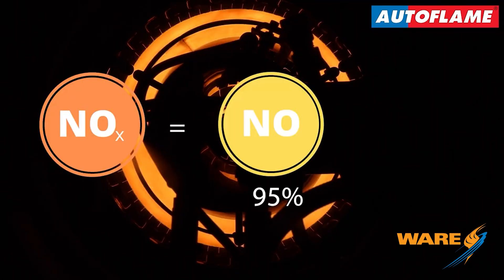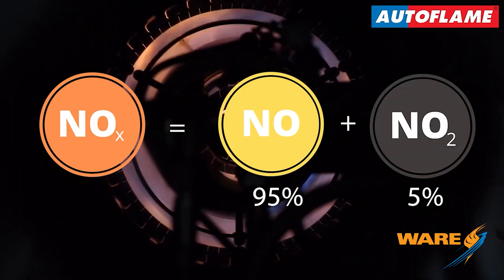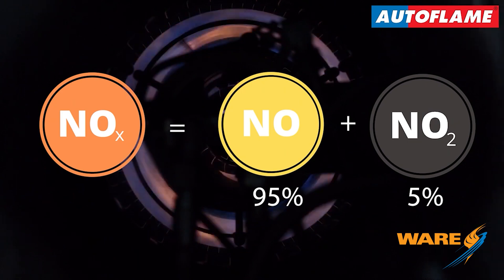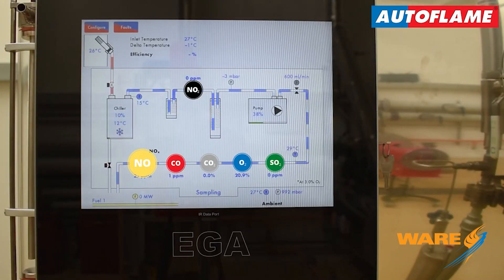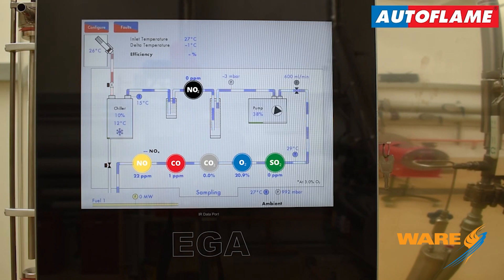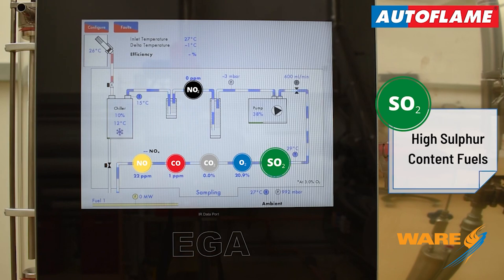NOx is comprised of around 95% NO and 5% NO2, so if accurate NOx measurement and reporting is necessary, then the NO2 cell is required. Otherwise, the EGA will calculate the NOx from the NO. We would recommend the SO2 cell for high sulfur content fuels, such as heavy oils.